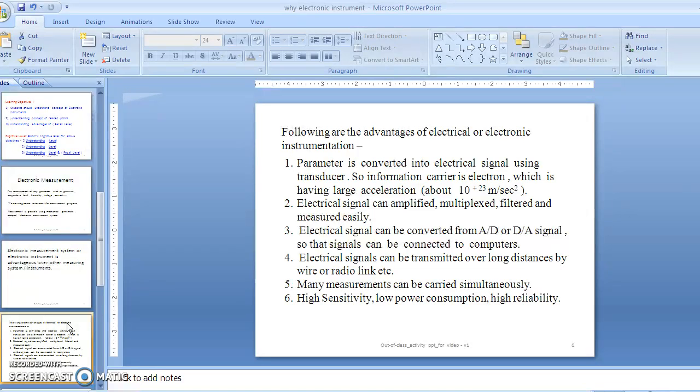The first advantage is that we use transducers. Transducers convert any physical parameter into electrical quantities, which are then displayed or measured with meter readings. The information carriers are electrons. These electrons have high acceleration, in the range of 10^23, so electronic measurement systems have large acceleration compared with mechanical, pneumatic, or hydraulic systems, resulting in quick response.